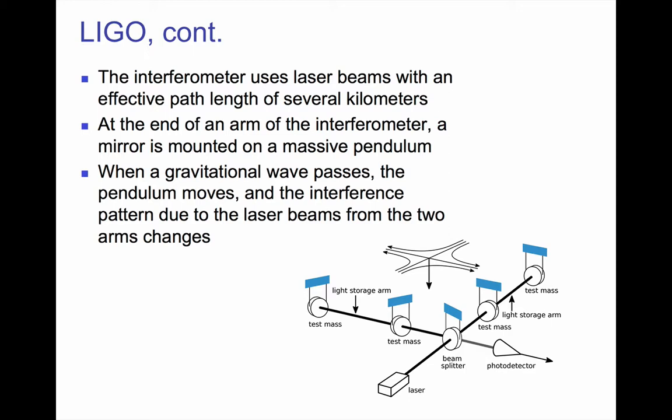So the effective length change between the two arms will mean that the light between the two is very slightly out of phase. The way it is set up is that the cavity is set to have destructive interference at the photo detector most of the time. That means the tiniest shift in path length difference between the two would show up as a very small signal rather than the zero that is the background signal.